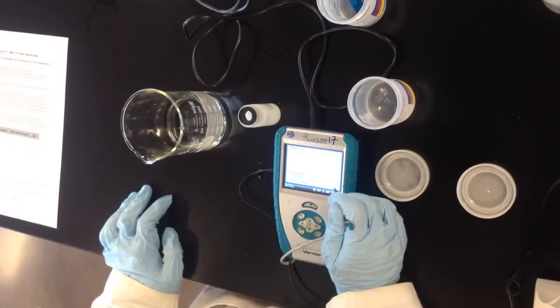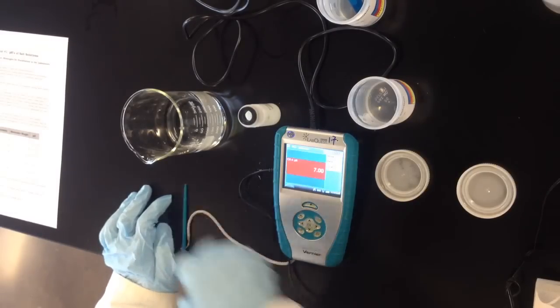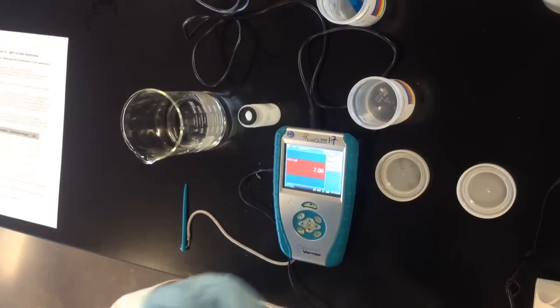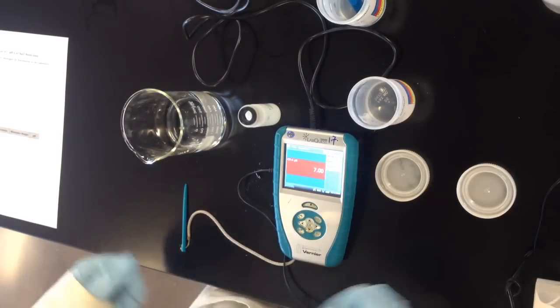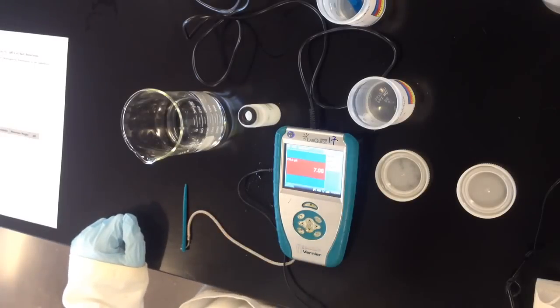Once I hit keep here, I can hit OK and the LabQuest will internally build a calibration curve from these two points and assume that they're connected through a line to build the calibration curve. And notice that now the pH reading is stabilized at 7.